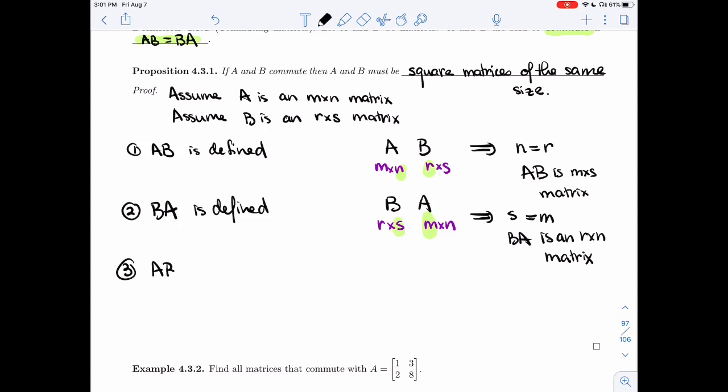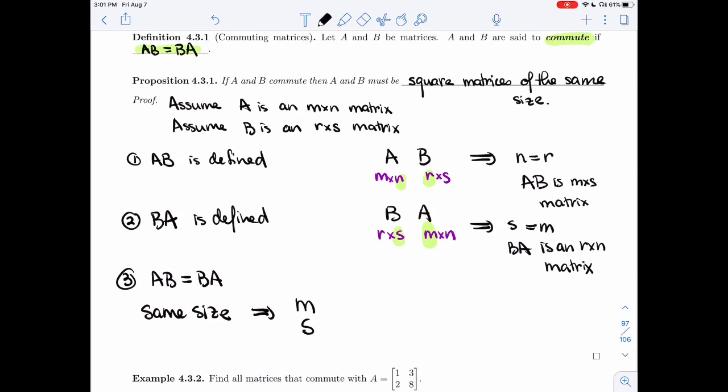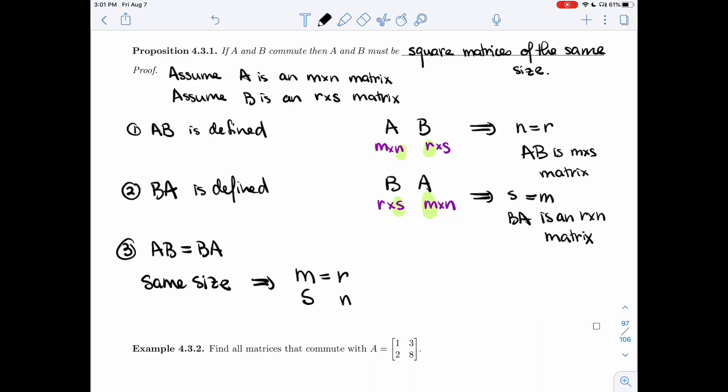Finally, AB is equal to BA, well, that means at the very least they must have the same size, and then you have other conditions about their entries being equal. So AB is an M by S, BA is an R by N, so M must be equal to R, and S must be equal to N.